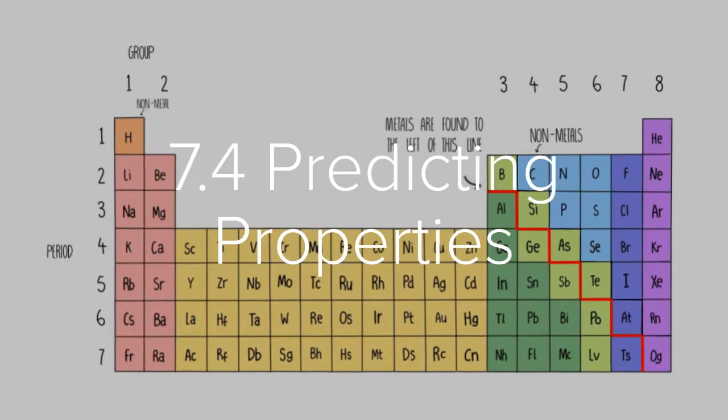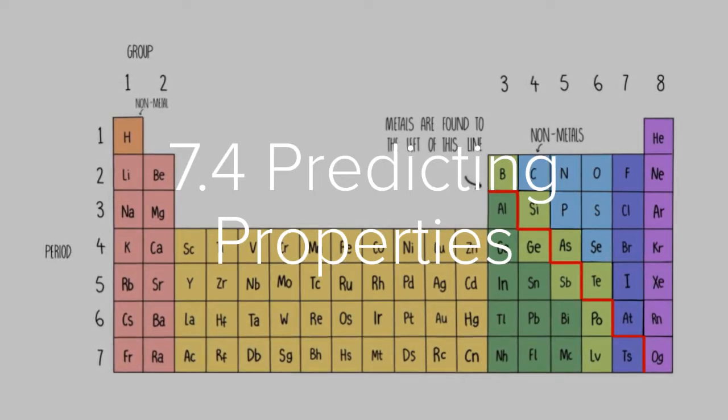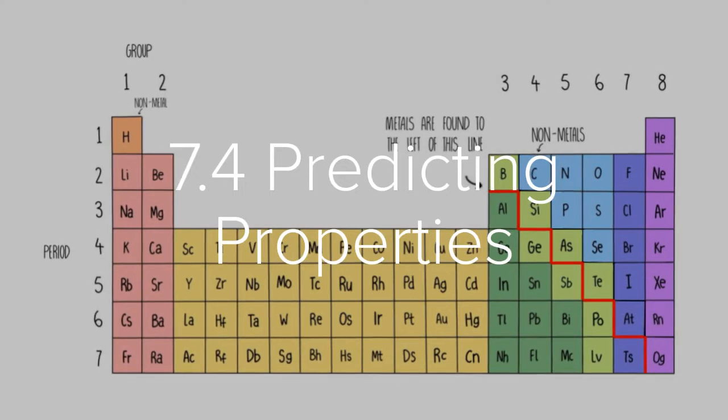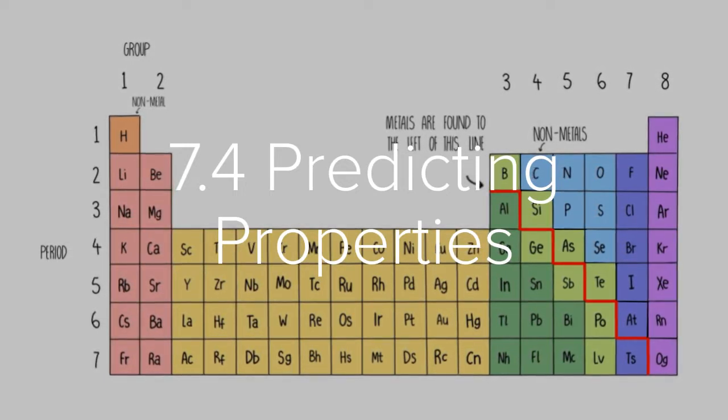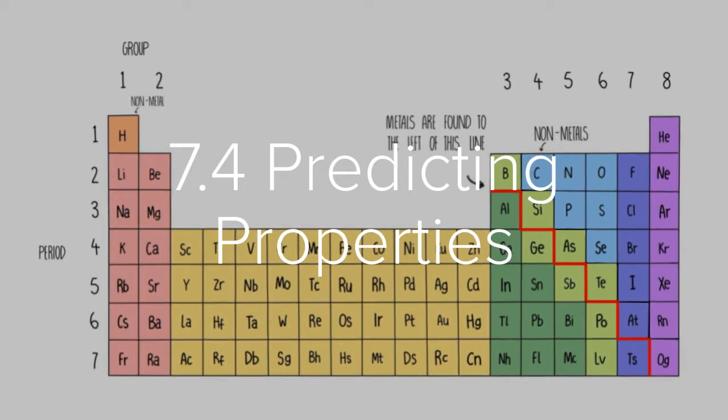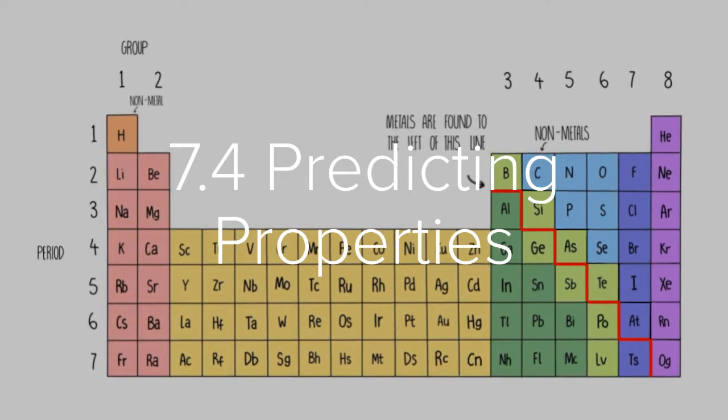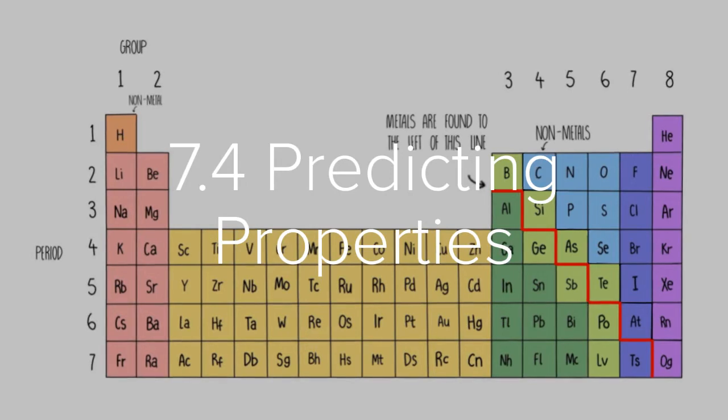Mendeleev proposed an arrangement of elements in what we now recognize as our modern periodic table. He was able to use patterns in physical and chemical properties to predict elements that had not even been discovered yet.